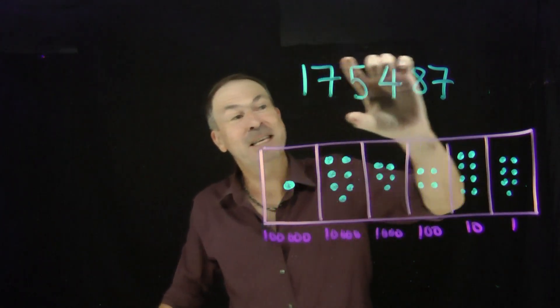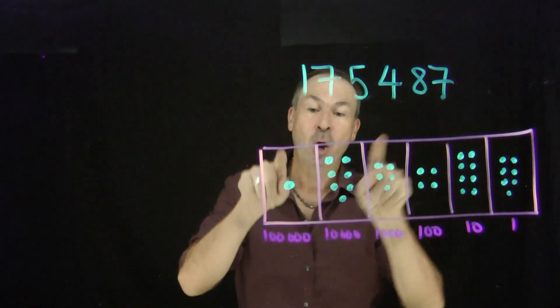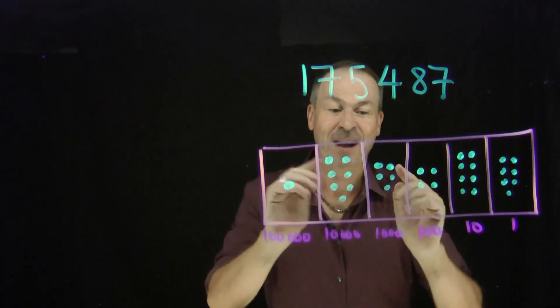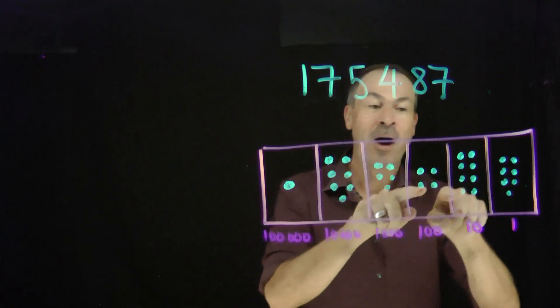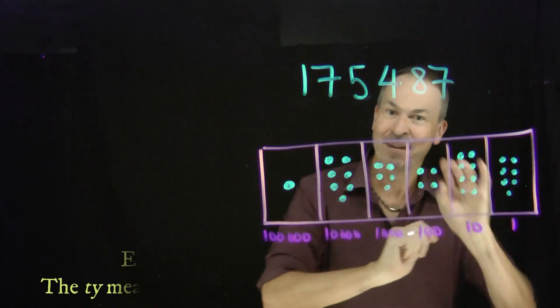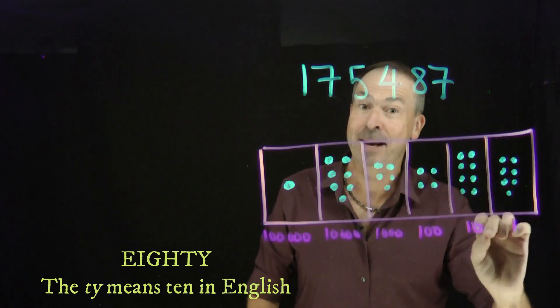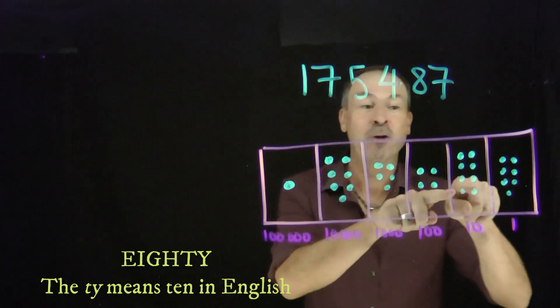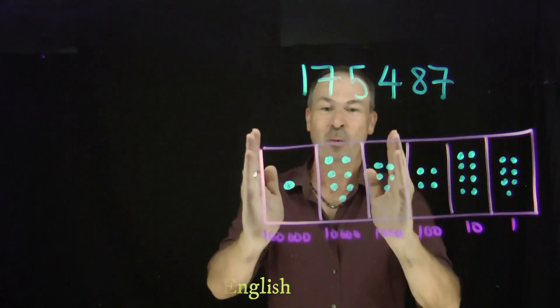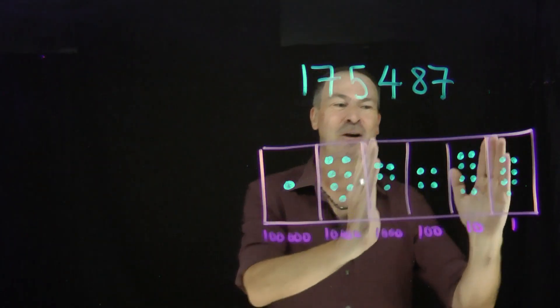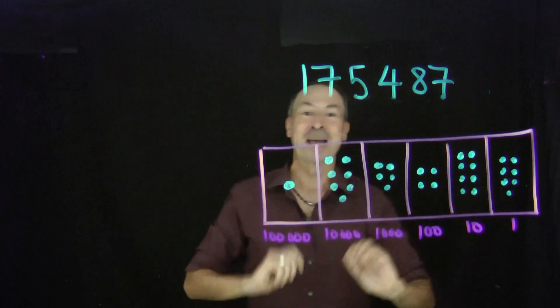For example, look at this big number. In English, we pronounce it as 175,487. For that 80, even that's interesting. That little ty in 80 actually means 8 tens. Ty means 10. 40 is 8 tens 7. 175,487. Grand and good.